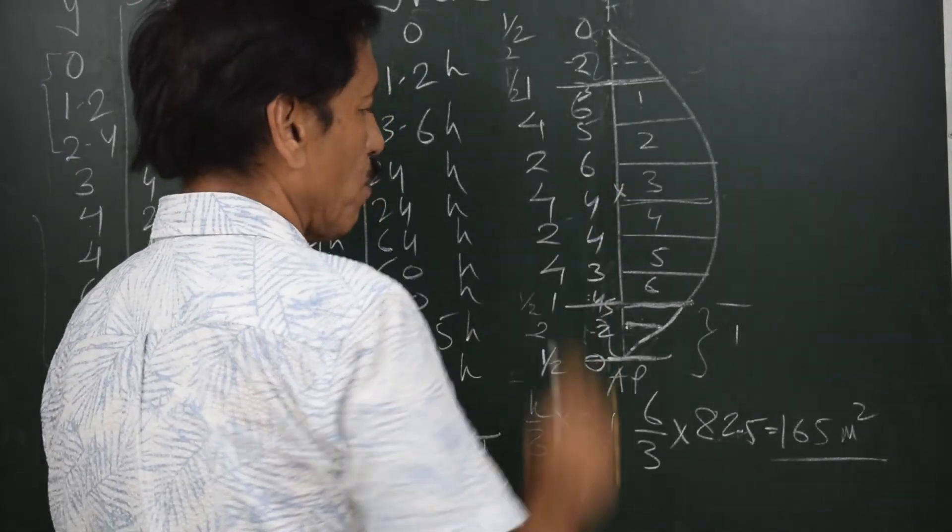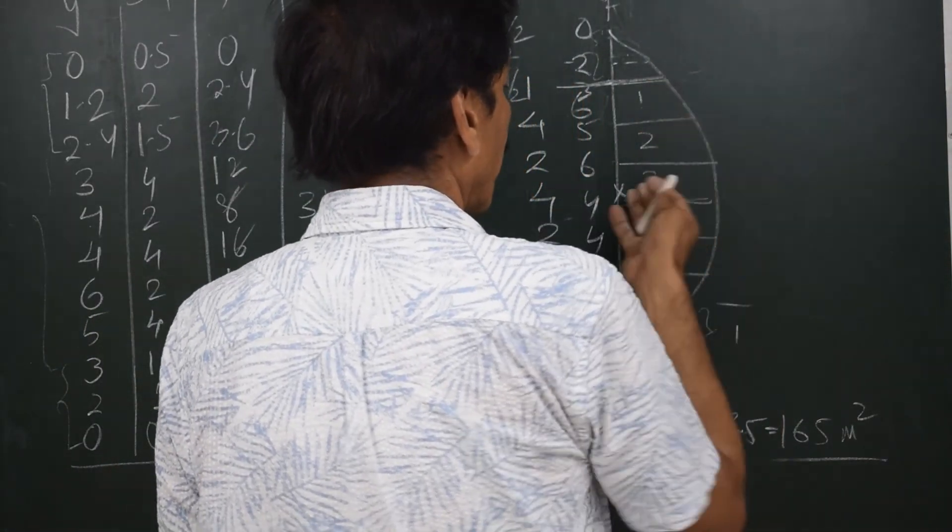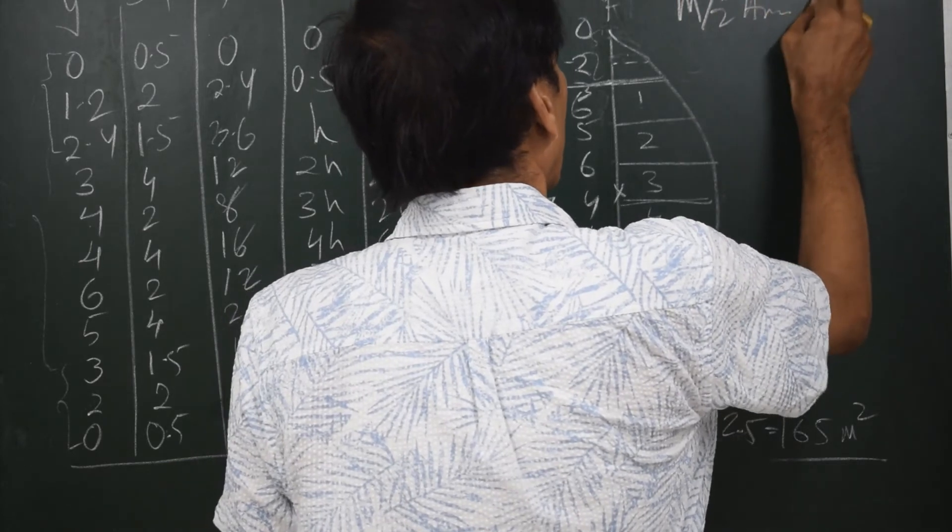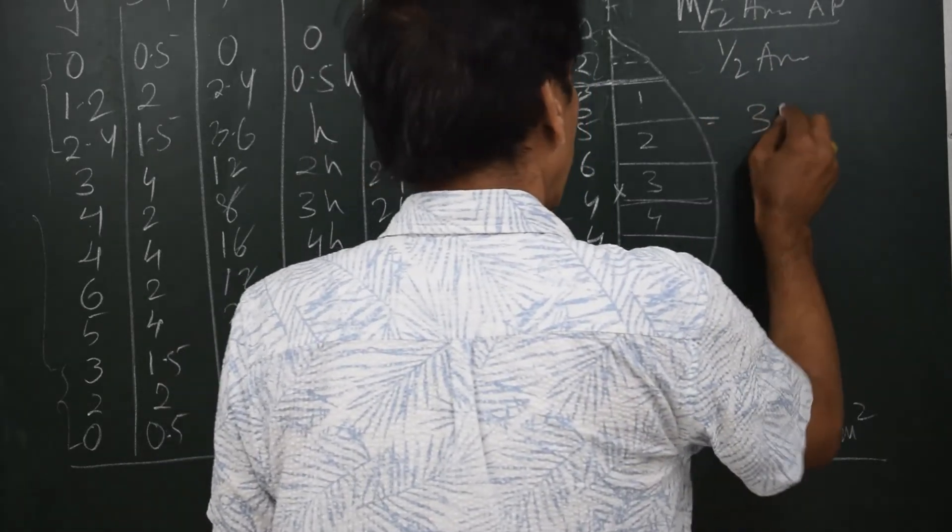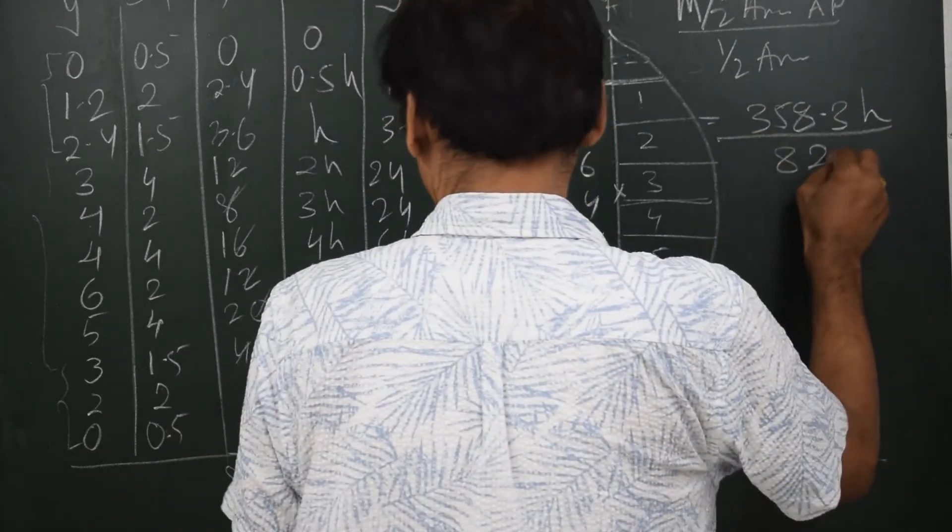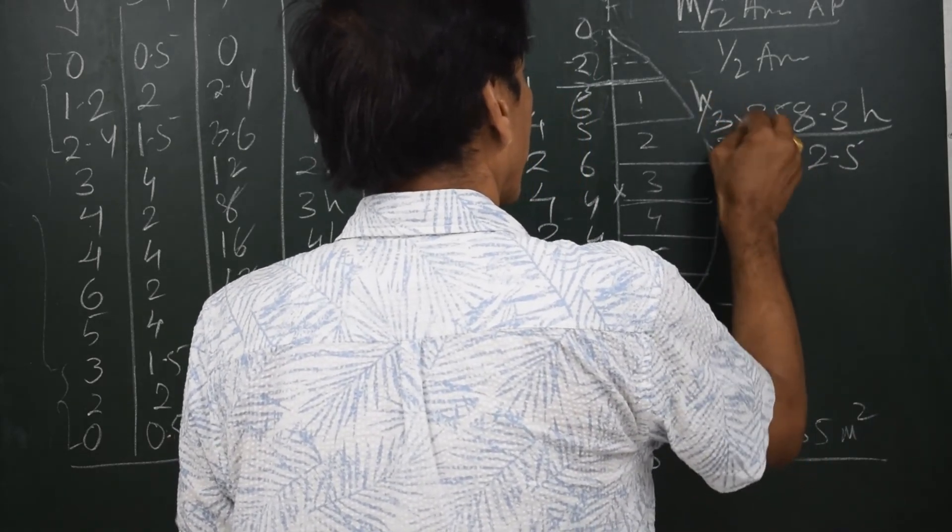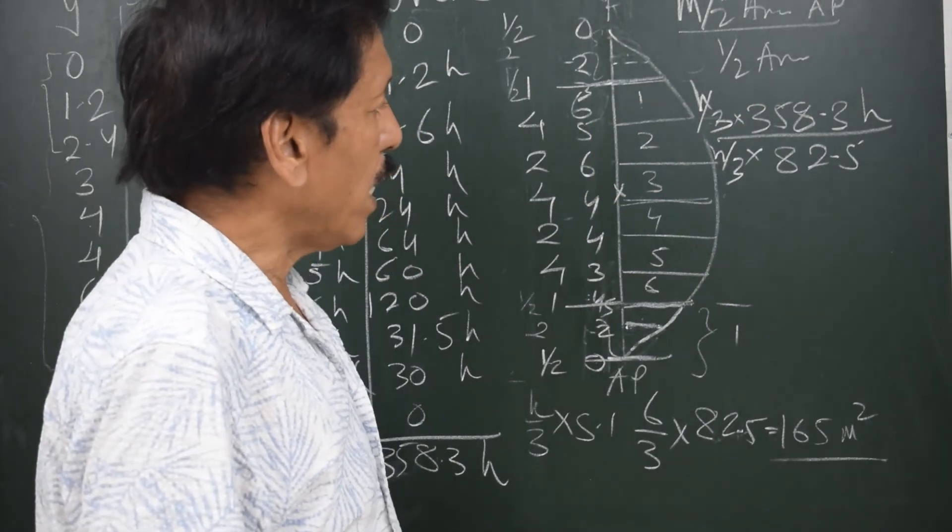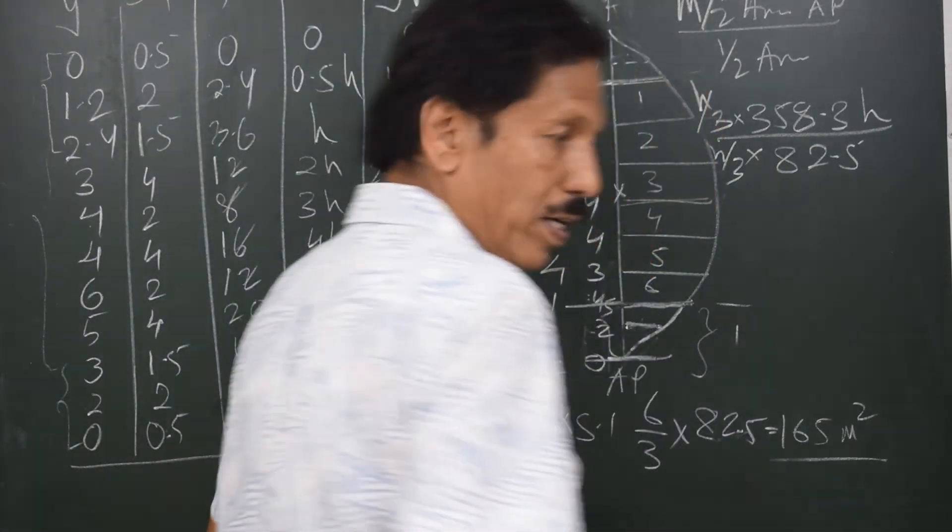So to find out the position of center of flotation with respect to half perpendicular, we can say that the distance of center of flotation from half perpendicular is equal to moment of half area about half perpendicular, divided by half area. And that would be equal to 358.3H divided by 82.5, and I write H by 3 before both the figures. So moment of area is H by 3 into 358.3H and area is H by 3 into 82.5. We don't have to double the area because we only have to find out the LCF. H by 3 and H by 3 get cancelled.